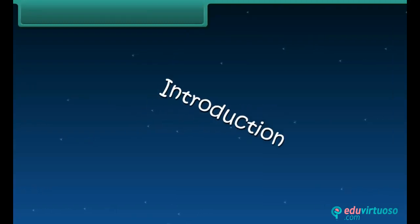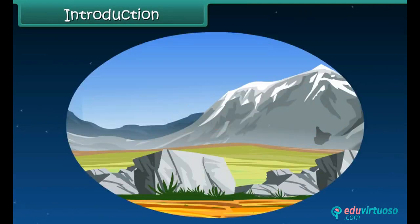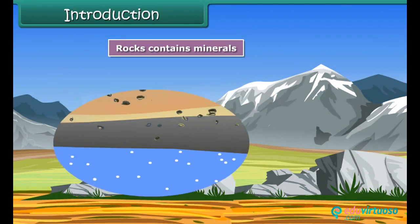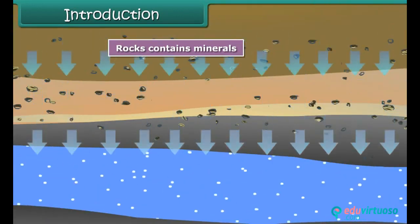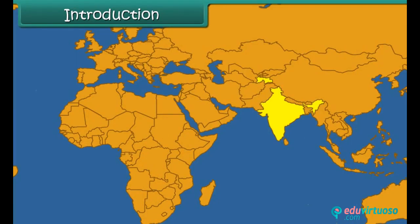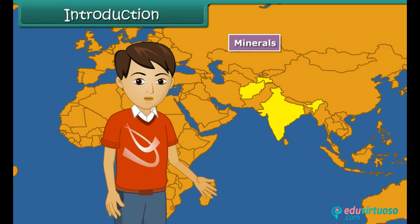The surface of our earth is made up of rocks. Rocks contain minerals which are used in many ways. Some countries have rich deposits of minerals while in few places it is rare. Let us learn about minerals in this lesson and locate the places where they are found in abundance.